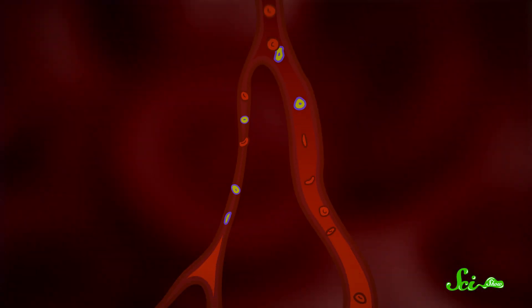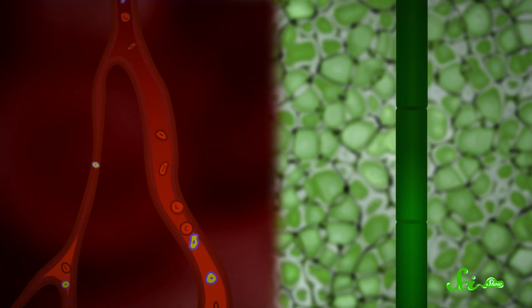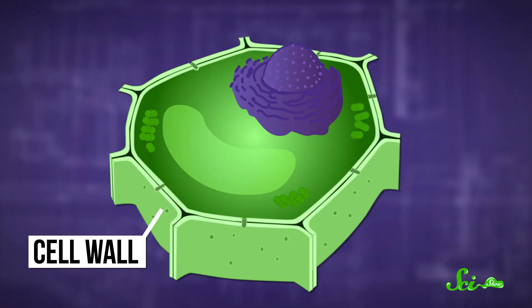In animals, cancerous cells invade other types of tissue by circulating around in the blood. But plants don't have a true circulatory system, and the fluids they use for nutrient transport like sap don't have cells in them. There's another factor keeping cancerous plant cells in place: the cell wall, a rigid structure that surrounds the outside of a cell and helps the plant stay upright. Those firm cell walls prevent cells from moving around within the plant, so a cancerous cell couldn't break off from the tumor and go spread to other tissues.